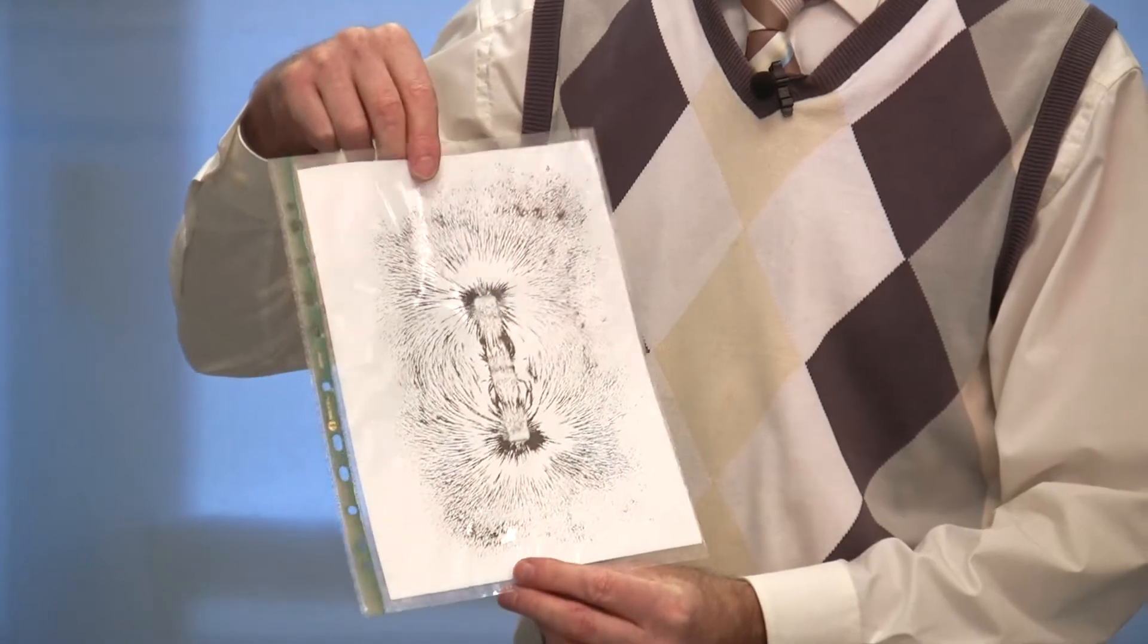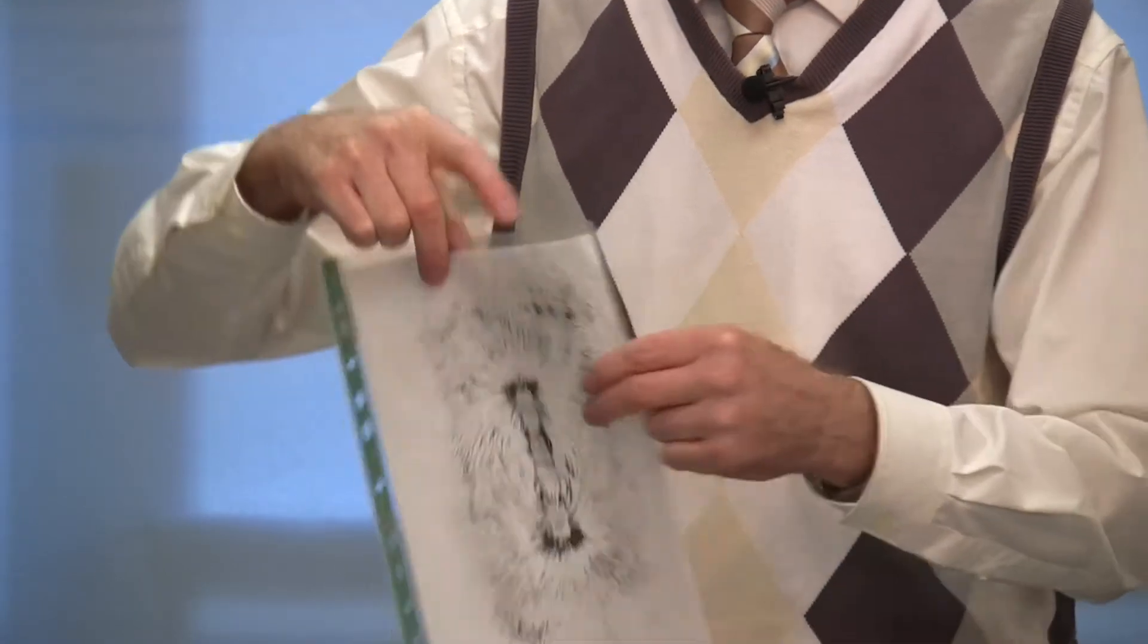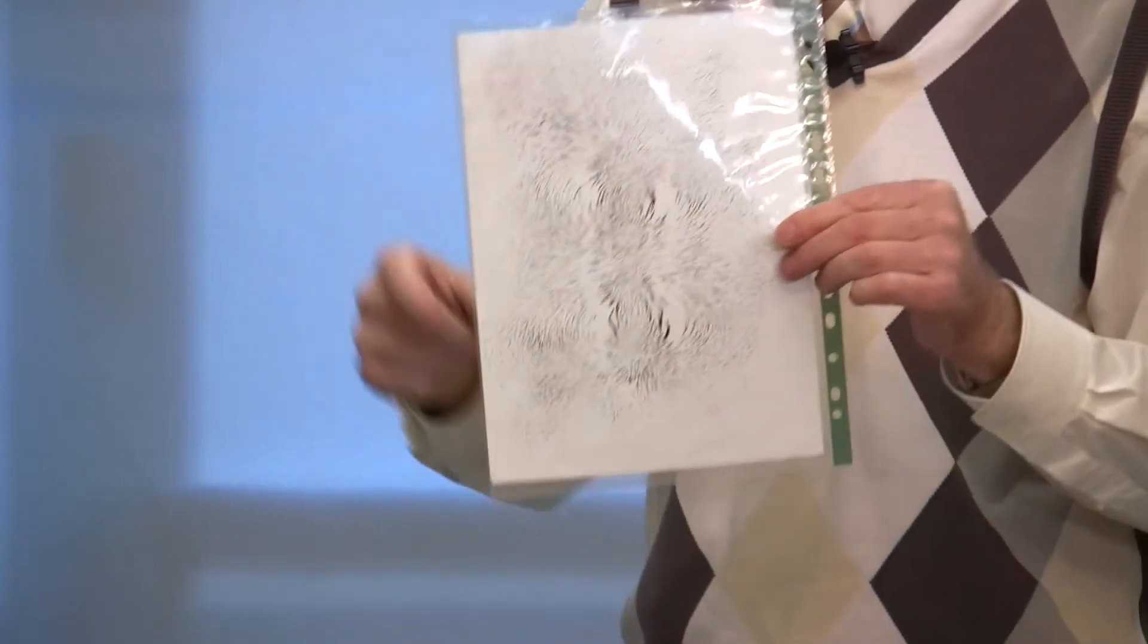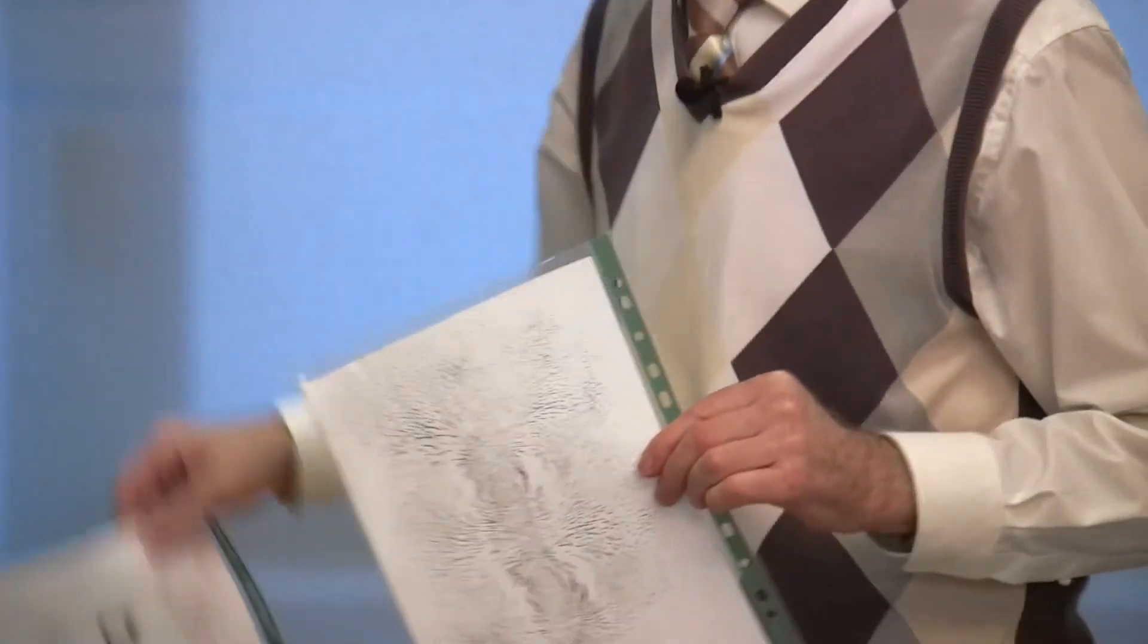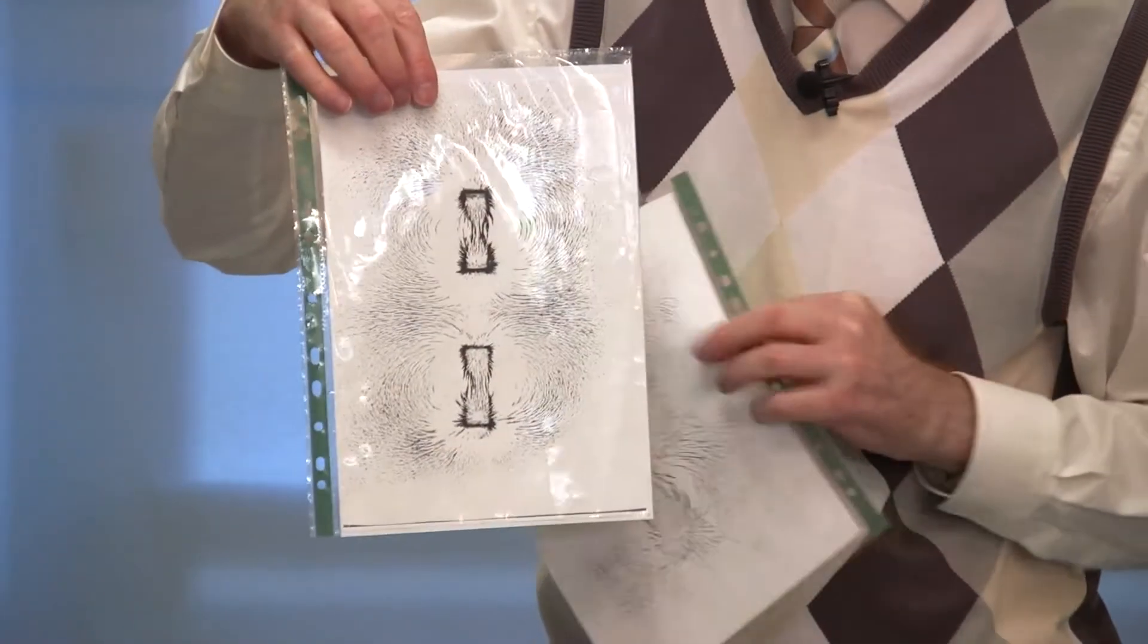The iron filings can then be collected easily with the magnet afterwards. You can arrange a pair of magnets in different ways to get different kinds of magnetic fields.